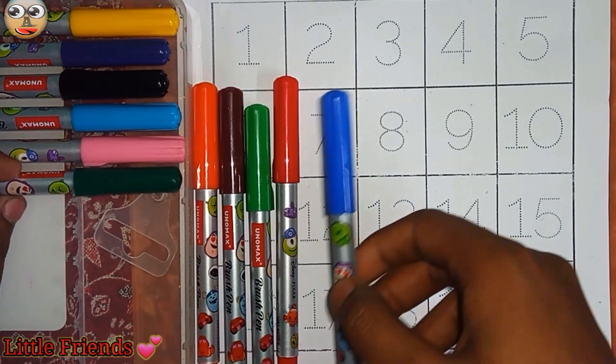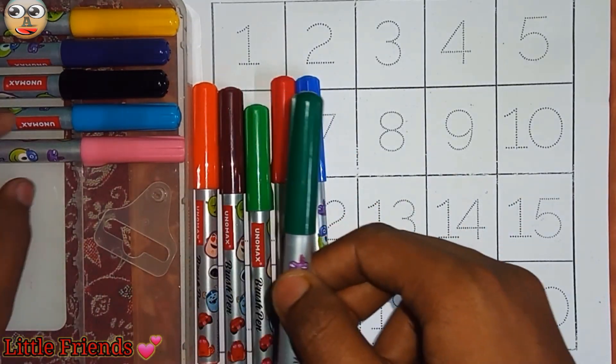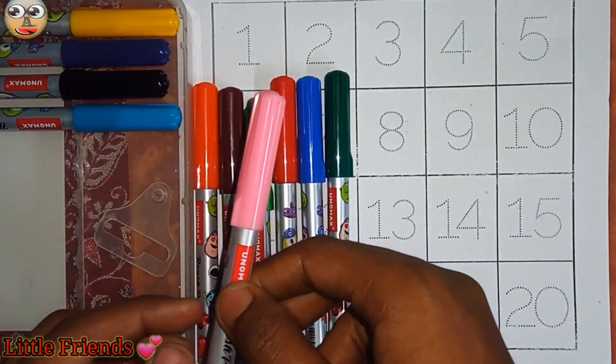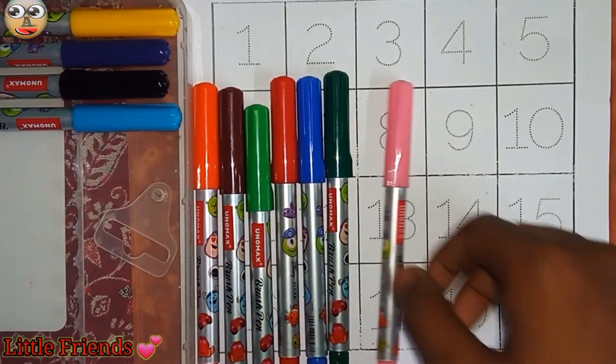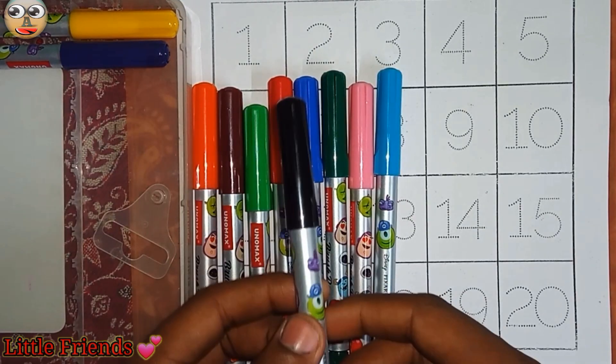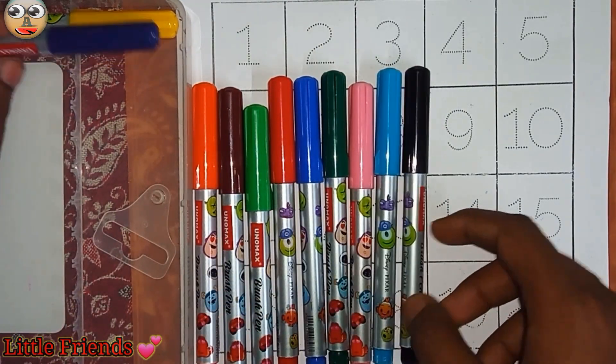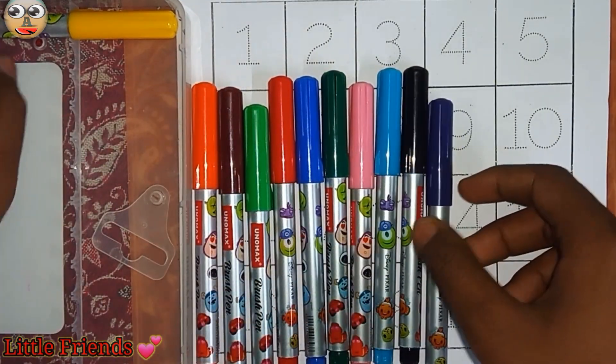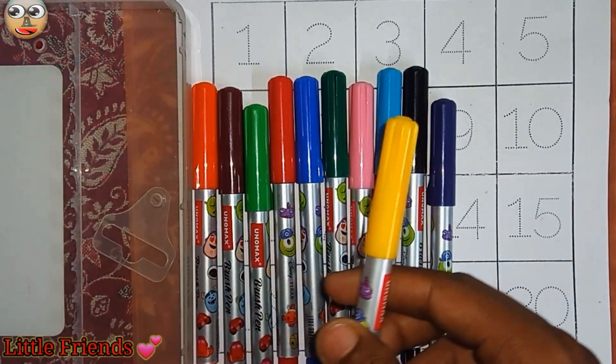This is blue color, dark green color, peach color, sky blue color, black color, purple color, and this is yellow color.